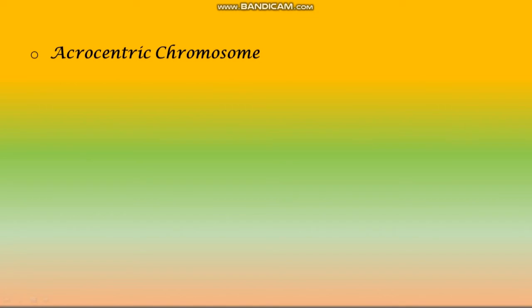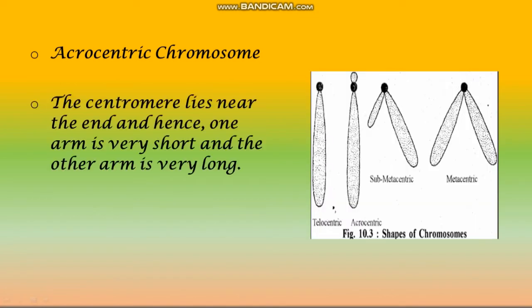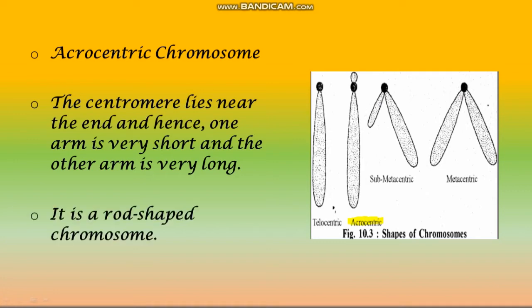Acrocentric chromosome: the centromere lies near the end and hence one arm is very short and the other arm is very long. It is a rod-shaped chromosome.